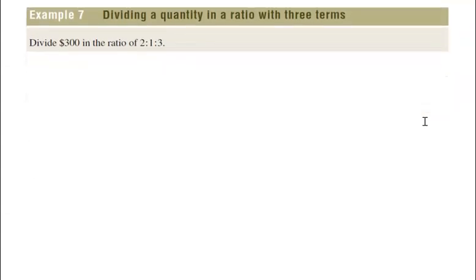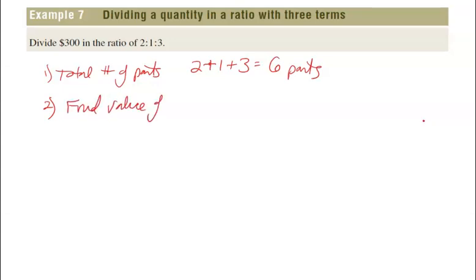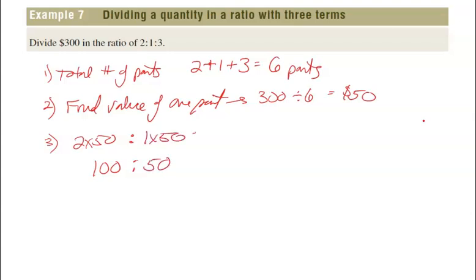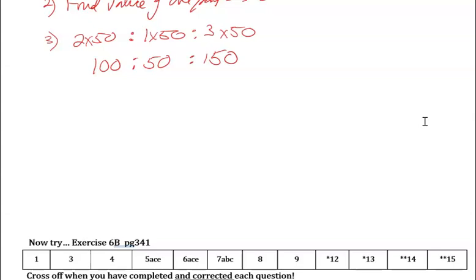And now if we want to divide a quantity in a ratio with three terms, it's not really that different. So I have $300 in a ratio of 2 to 1 to 3. I'm going to use my unitary method and find the total number of parts, which is 2 plus 1 plus 3 should give me 6 parts. And then number 2, I'm going to find the value of one part, which is going to be 300 divided by 6, which is $50. And then 3, I'm going to do 2 times 50, which is $100, and 1 times 50, because that's one part, and then 3 times 50, which is $150.